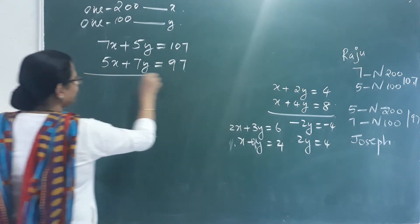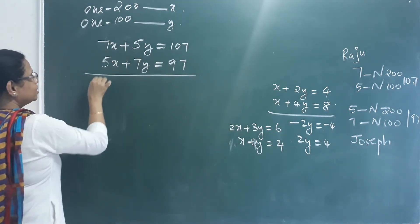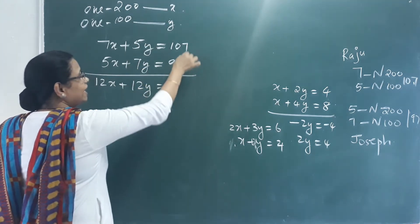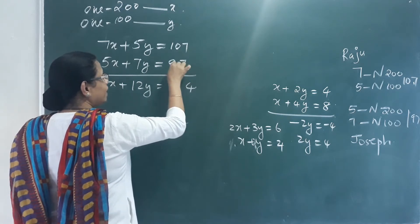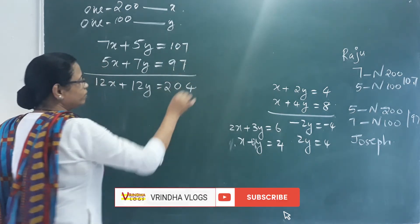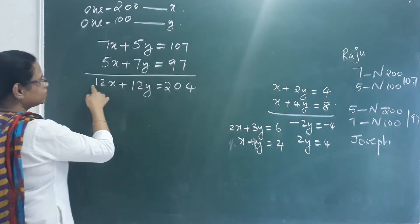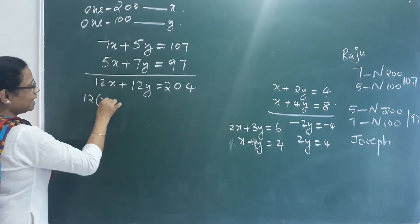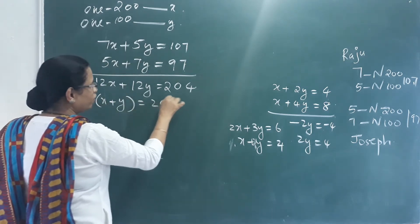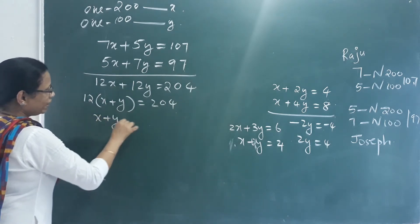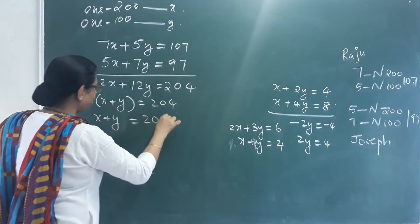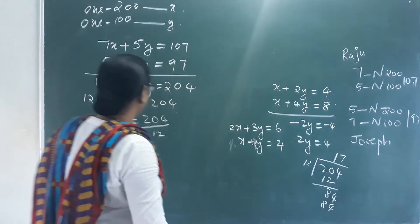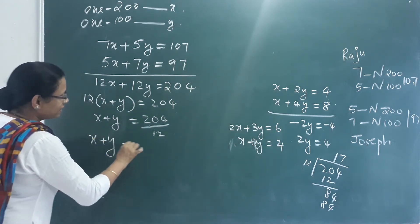Now let's add the two equations. Adding gives us 12x plus 12y equals 204. Taking 12 outside: 12 times (x plus y) equals 204. So x plus y equals 204 divided by 12, which equals 17. This is equation number 3.